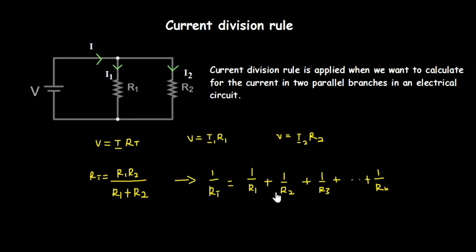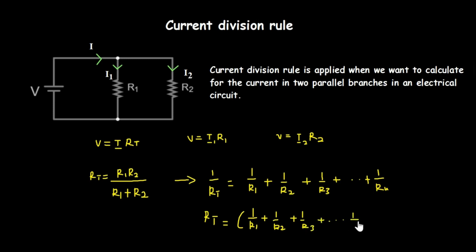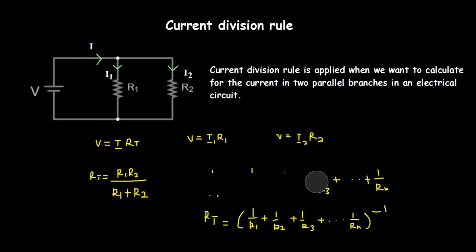In that case, R_t equals the inverse of the sum of the reciprocals of the resistance values — one over R1 plus one over R2 plus one over R3, up to one over R_n. You then take the inverse of the result to get the effective resistance. But that's just by the way — let's continue.